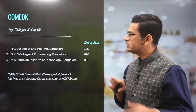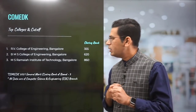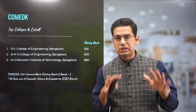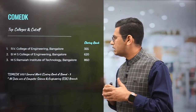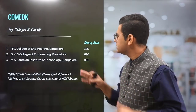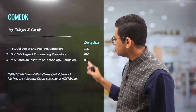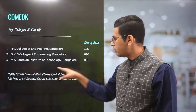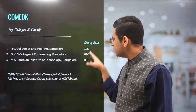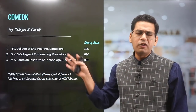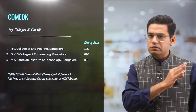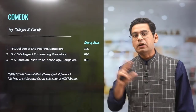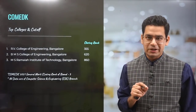Now the top 3 colleges that come under the COMEDK bracket: RV College of Engineering — a very, very good college, one of the best in South India — and most of the seats are taken through COMEDK. Very limited seats. The closing ranks we are showing are for General Merit (GM) for Round 3, and these data are all for the CS branch.